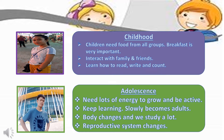Adolescence takes place between ages 12 to 17 years old and is considered a turning point because puberty takes place, changing the physical and emotional characteristics of humans — like having menstruation for girls and voice changes for boys. Adolescence needs lots of energy to grow and be active. They keep on learning, slowly become adults, the body changes, and they study a lot. During this stage, the reproductive system changes.